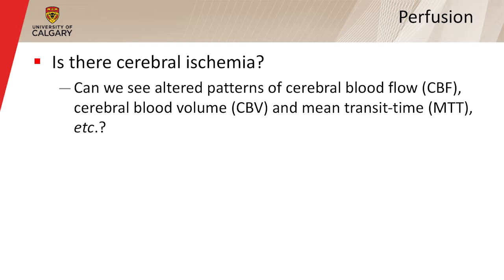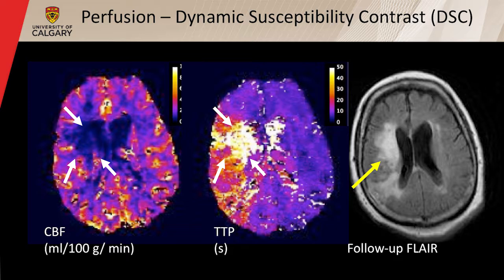The third P is Perfusion. The question here is simple: is there cerebral ischemia? We're interested in altered patterns of blood flow, blood volume, or mean transit time in the brain. We commonly use a dynamic susceptibility contrast technique — injecting a gadolinium agent intravenously, watching it flow through the brain with a T2-star weighted EPI sequence — and process the signal versus time curves to develop relative or quantitative maps. Here's an example of a patient with a stroke in the right hemisphere showing a large CBF deficit and delay in transit time, agreeing well with follow-up FLAIR imaging.